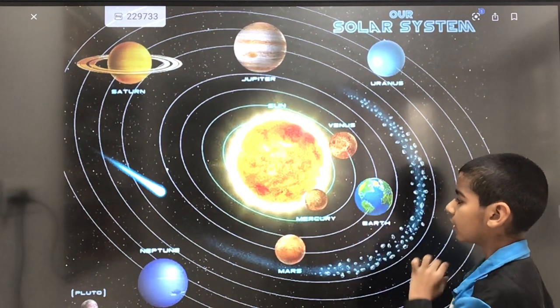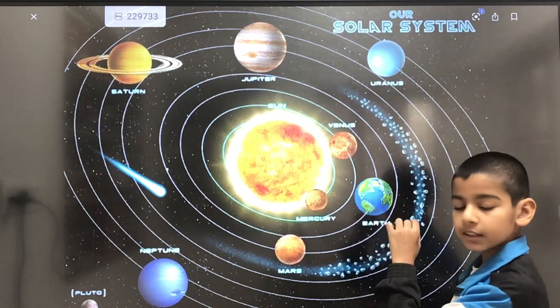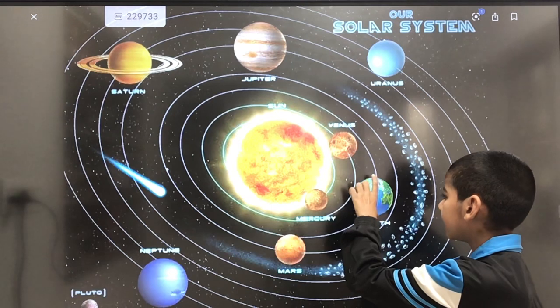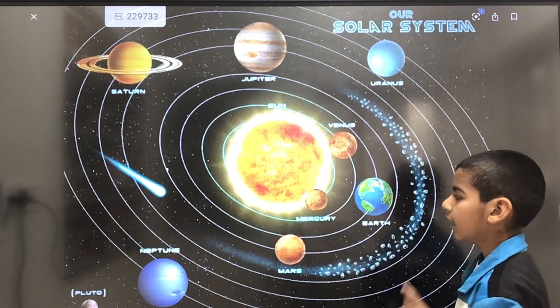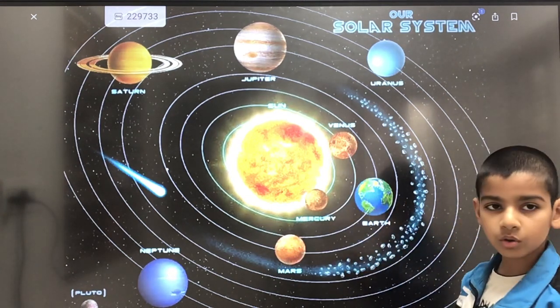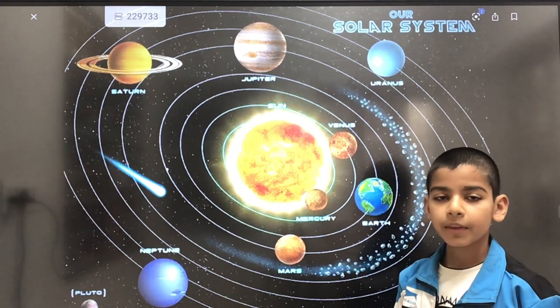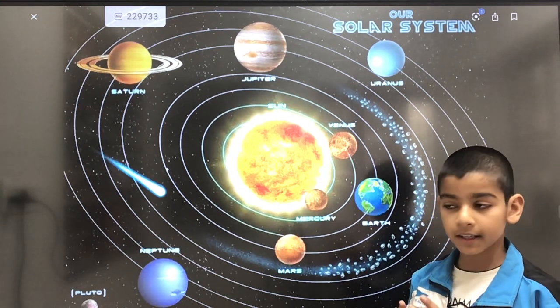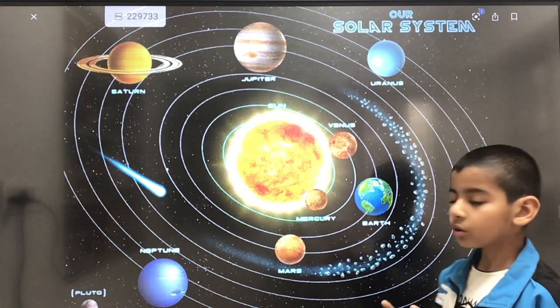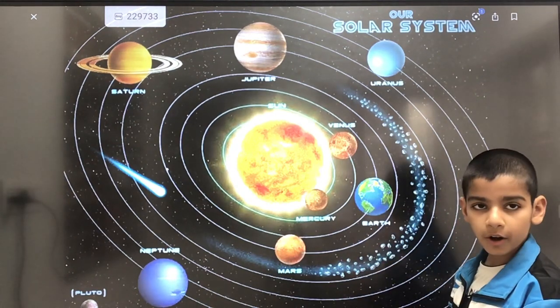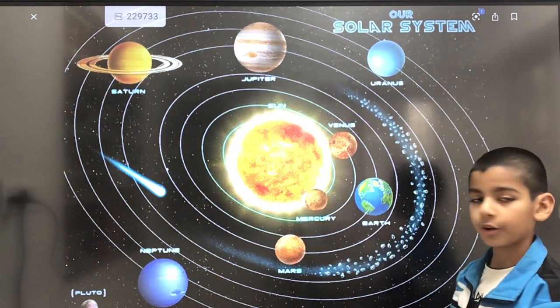These solar winds get deflected and go to the North Pole and South Pole. When solar winds collide, they create auroras. In the North, it's called aurora borealis, and in the South, it's called aurora australis.